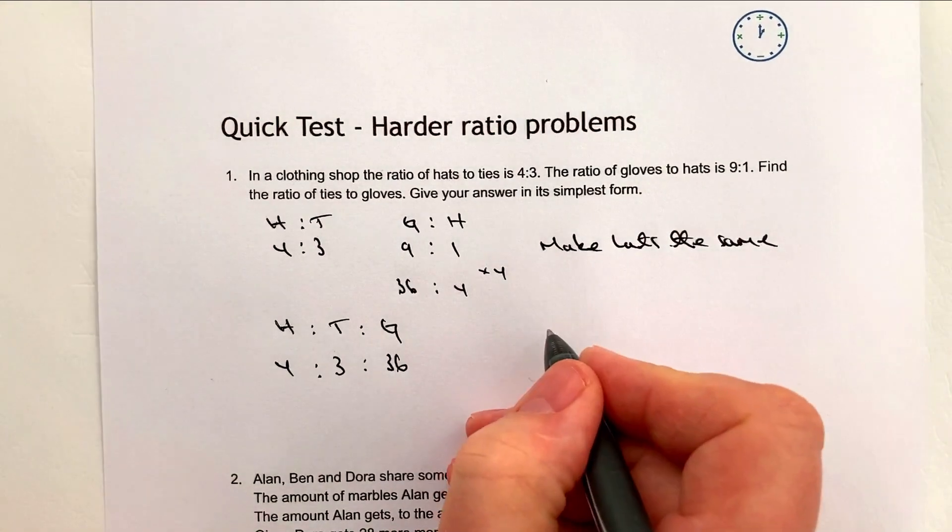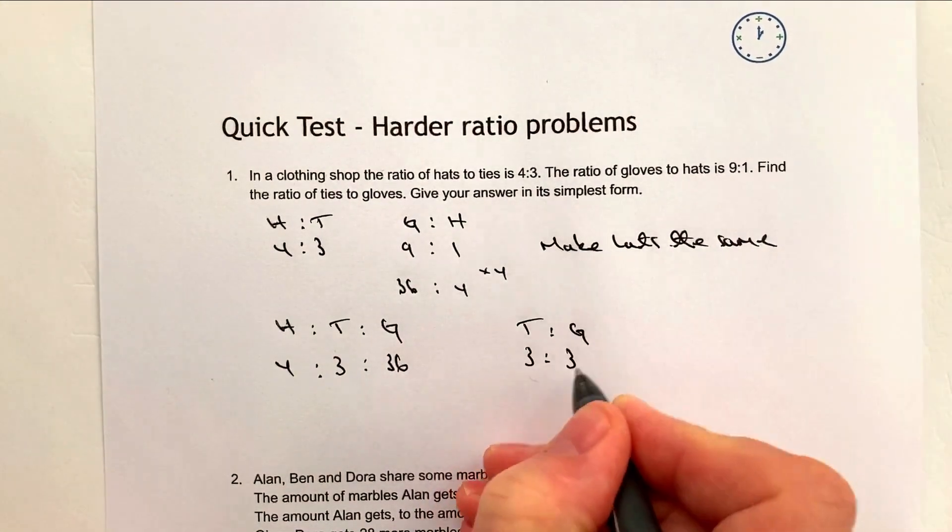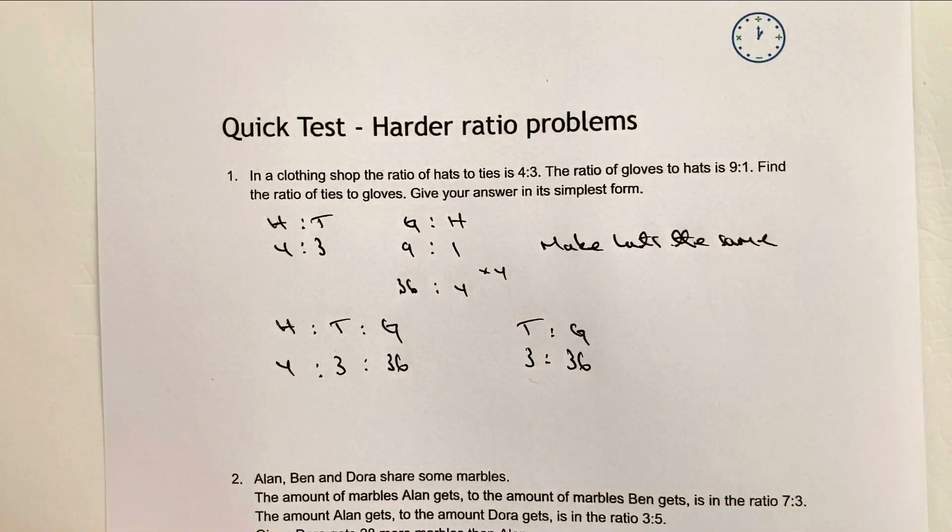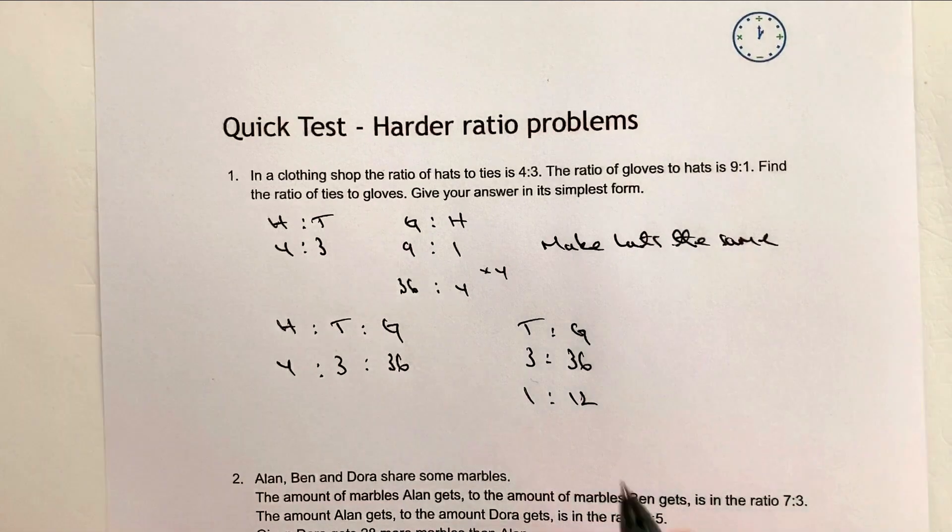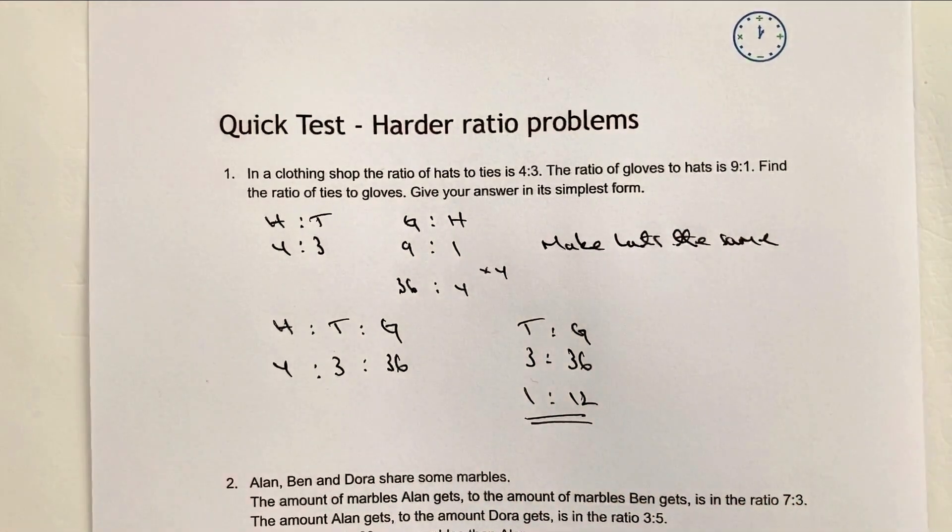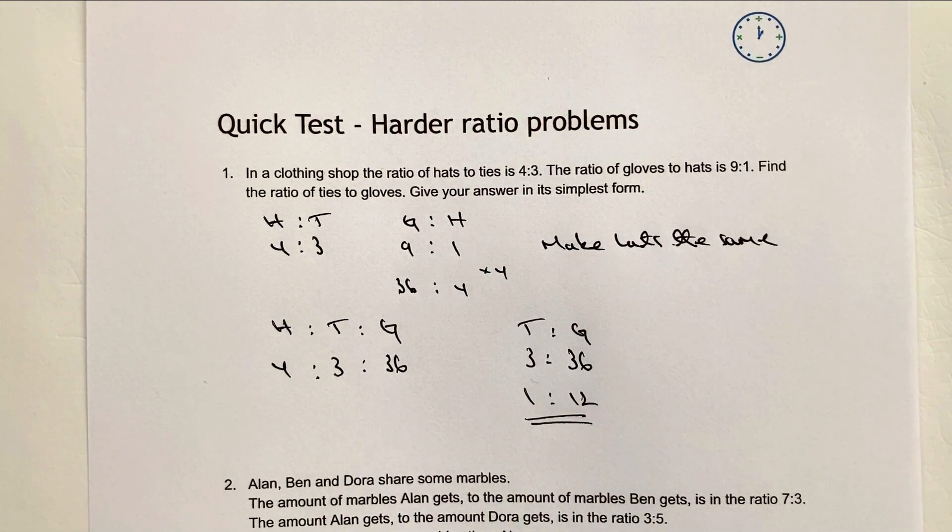Well, that's ties to gloves is going to be 3 to 36. But in its simplest form, it's going to be 1 to 12. So the answer to this particular question is going to be 1 to 12. Hope that's OK for you. As I say, please do stop the video, have a go at these questions and then compare your solutions. If you're not sure, add a comment below. I'll always come back to you.